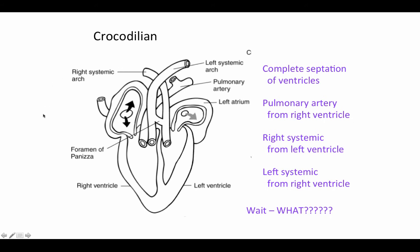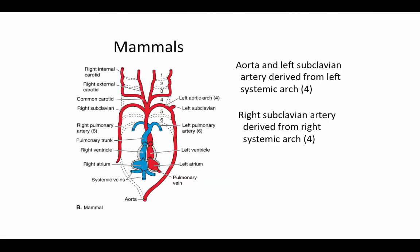In mammals, we have the same loss of arches one, two, and five. A common carotid artery arises from arch three, giving rise to the internal and external carotid arteries. The carotid duct — the connection between arch three and four along that portion of the dorsal aorta — is lost in mammals. In arch four, the systemic arch, we now have just a single aorta arising from the left aortic arch; the right side of it becomes the right subclavian artery going out to the right forelimb, while the left subclavian artery is a branch off of the single aorta. The sixth arch continues to be the pulmonary arch, and the ductus arteriosus between arch six and the dorsal aorta is closed and lost in adult mammals.